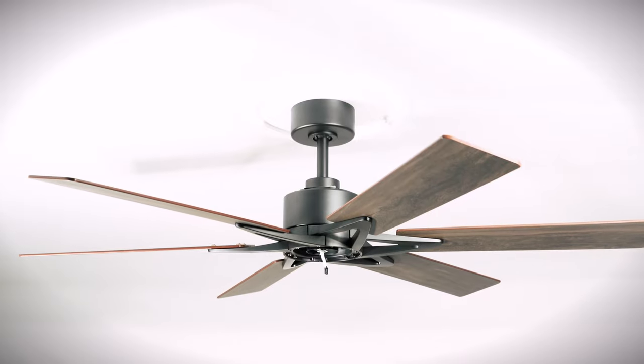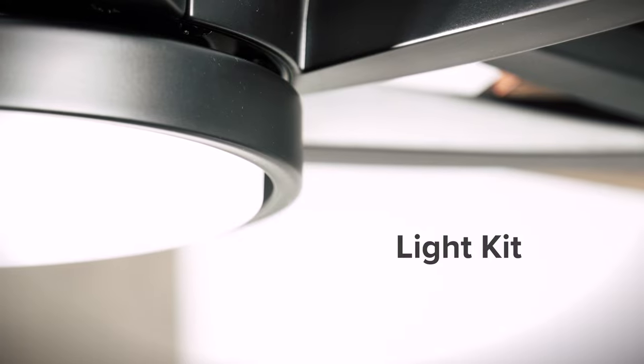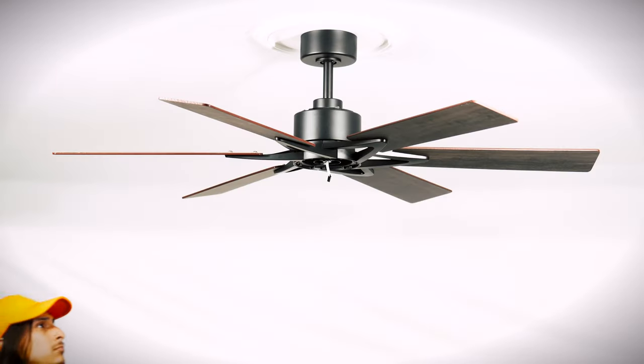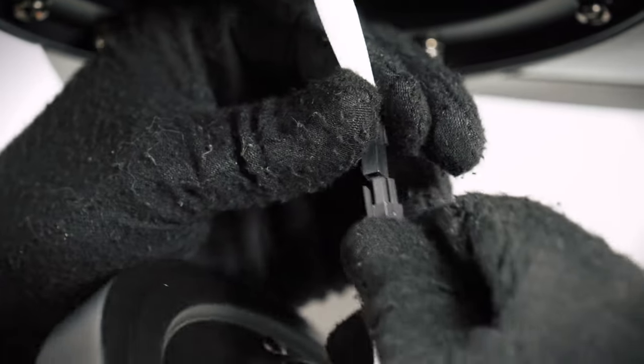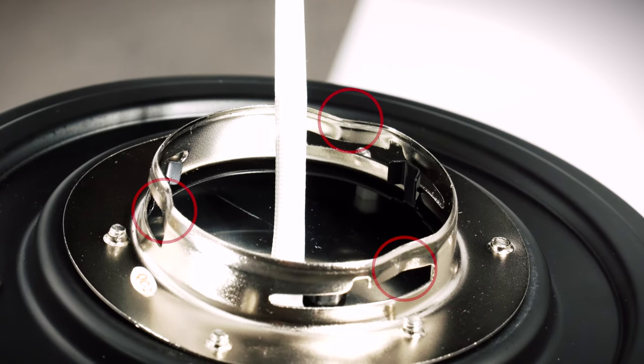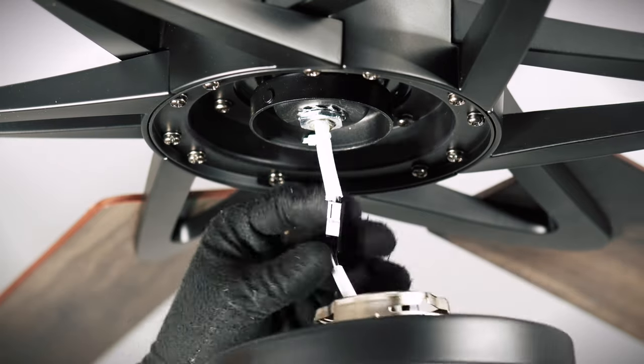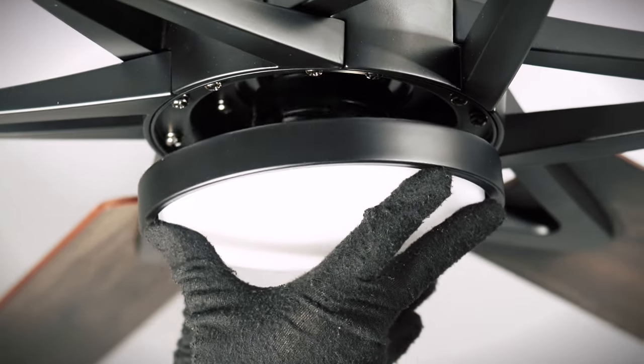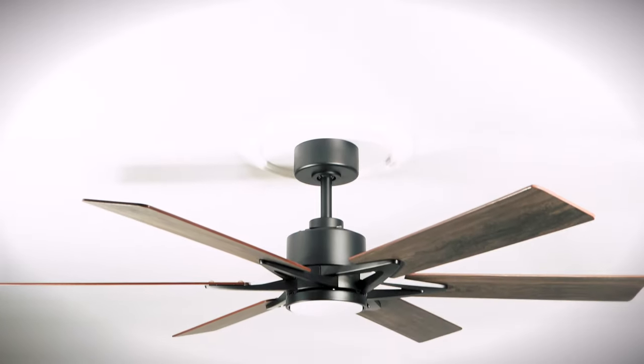With the fan blades attached, you can now install the light kit. Bring the LED light kit up to the fan and connect the two pin wire connectors. Locate the slots on the light kit. Locate the tabs on the motor's mounting ring. Align the light kit slots over the tabs and turn clockwise until snug. The assembly is complete and the remote is now ready for setup.